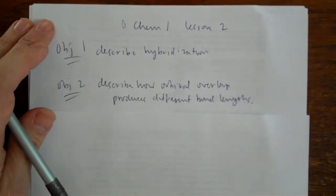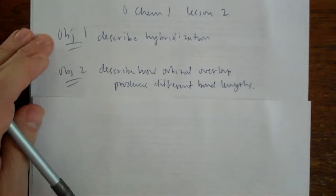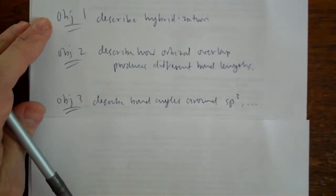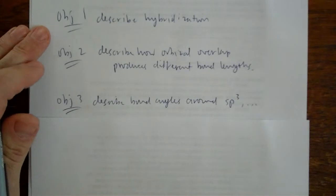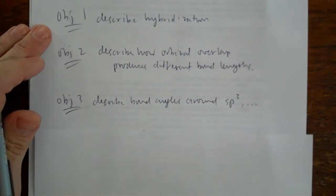Objective number 2 is describe how orbital overlap produces different bond lengths and strengths. Objective 3 is describe the bond angles around sp3 hybridized atoms, sp2, and sp hybridized atoms.